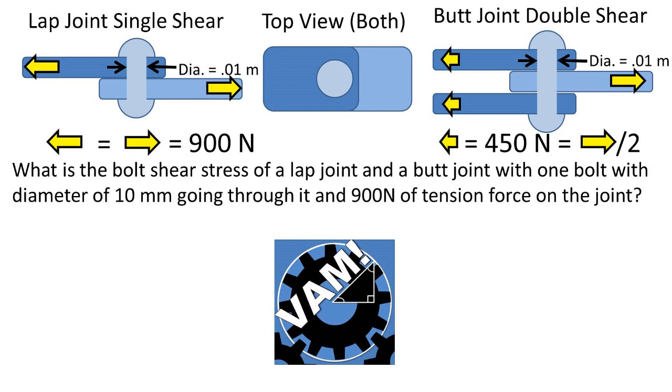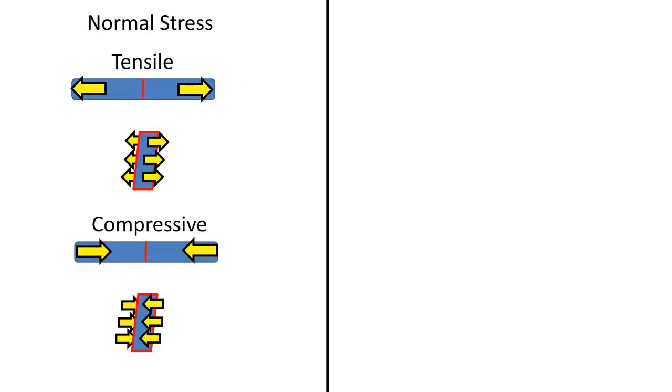Both of these joints have one bolt with a diameter of 10 millimeters going through it, and 900 newtons of tension force on the joint. To begin,